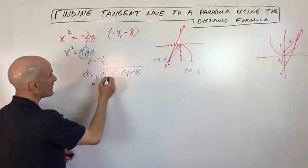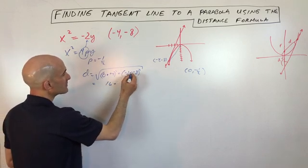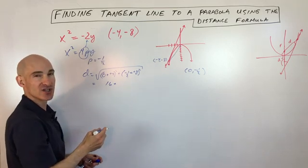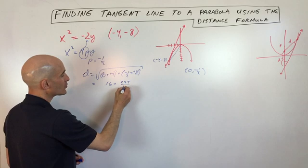So if we simplify this, we get 16 plus this comes out to 7 and a half, which is 15 halves, which if we square that, we get 225 fourths.